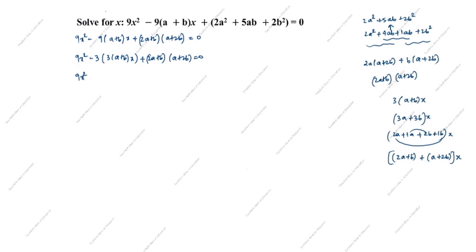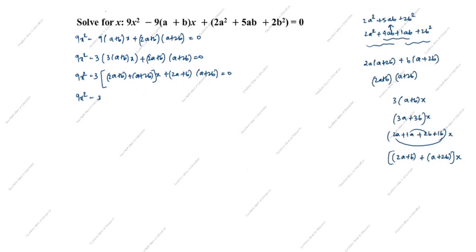Next step: 9x² minus 3(2a+b)x minus 3(a+2b)x plus (2a+b)(a+2b) equals 0. We will now group and take common factors.